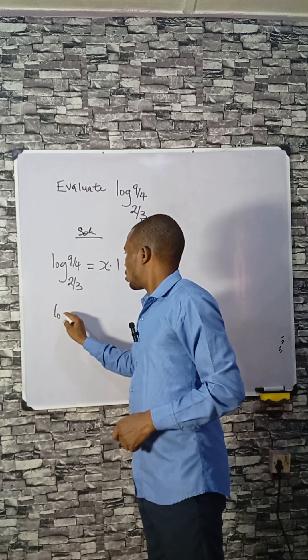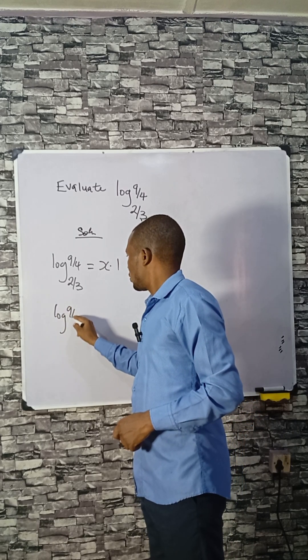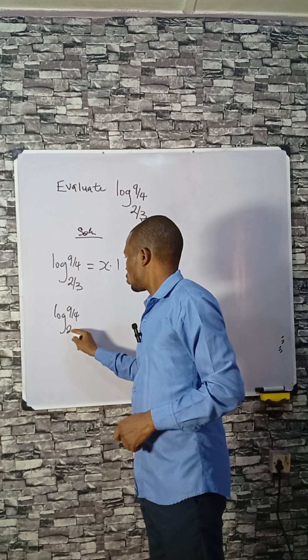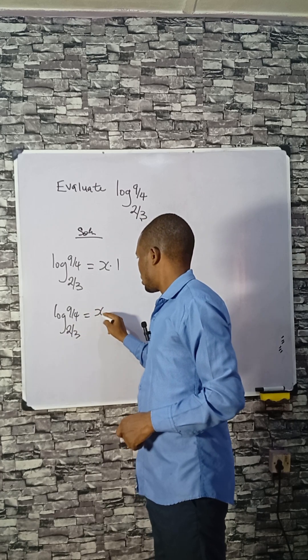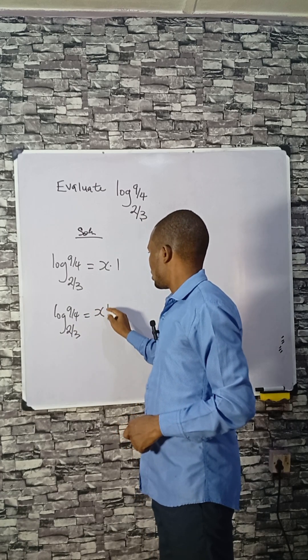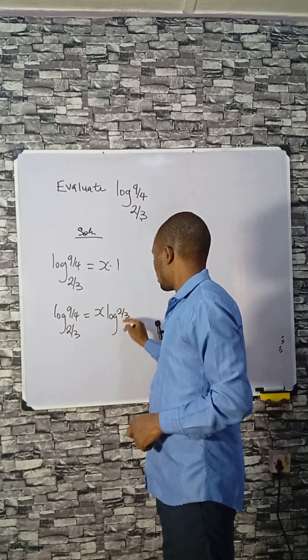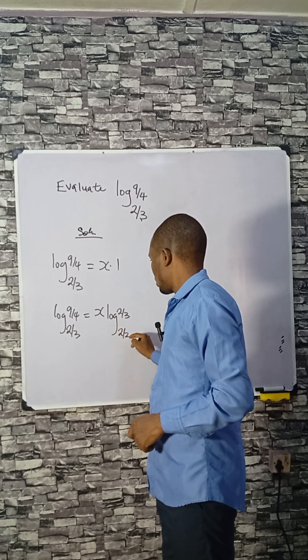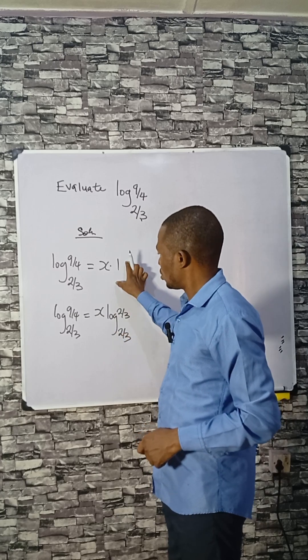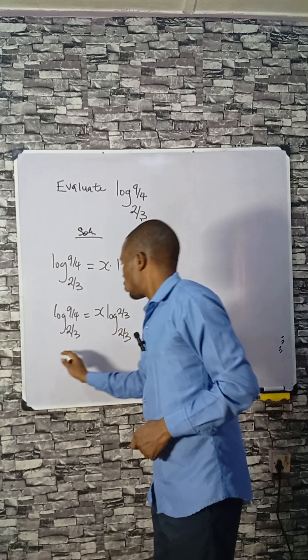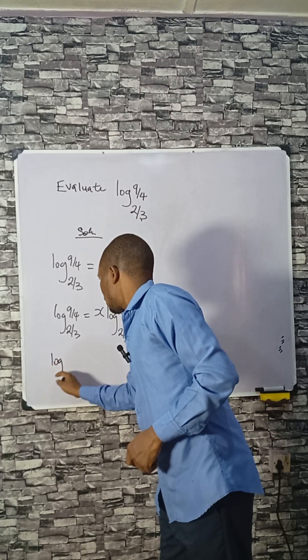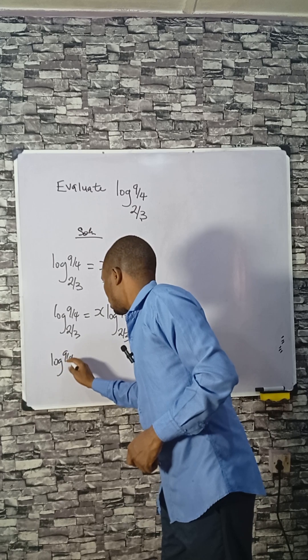Now log 9 divided by 4 base 2 over 3 equals to x. The one here can be replaced with log 2 over 3 base 2 over 3. Log to its base is 1, so if I do the last step...